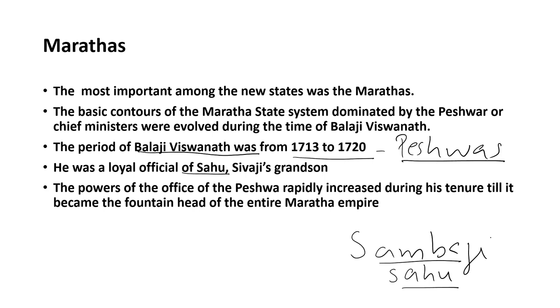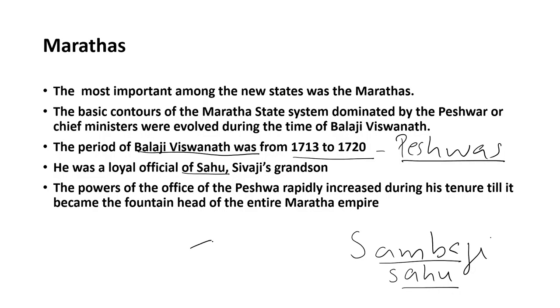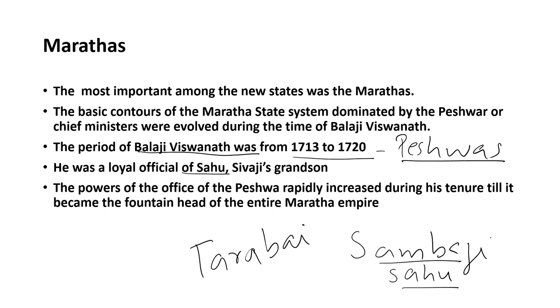After the death of Aurangzeb, Shahu was released from jail. In the struggle for power between Tarabai and Shahu, Balaji Vishwanath supported Shahu. The Prime Minister, or Peshwa, emerged as an important administrative figure in the Maratha system. Balaji Vishwanath was the first Peshwa, ruling from 1713 to 1720. After a brief rule of seven years he died, and his son Baji Rao I became the next Peshwa in 1720, ruling for 20 years.